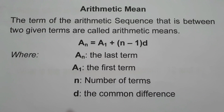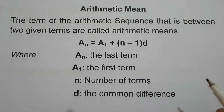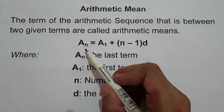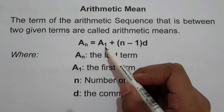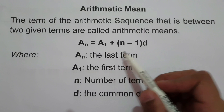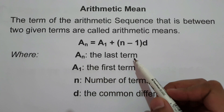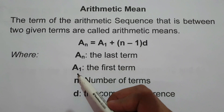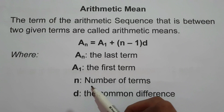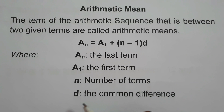In order for us to understand what is arithmetic mean, let us familiarize ourselves with the formula of arithmetic sequence. That is: a sub n equals a sub 1 plus n minus 1 times d. Where a sub n is the last term, a sub 1 is the first term, n is the number of terms, and d is the common difference.